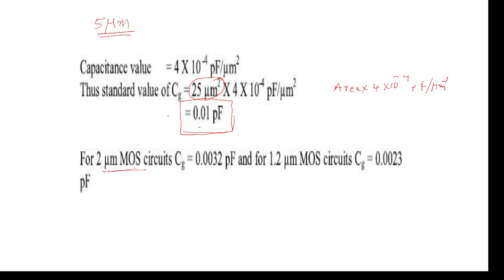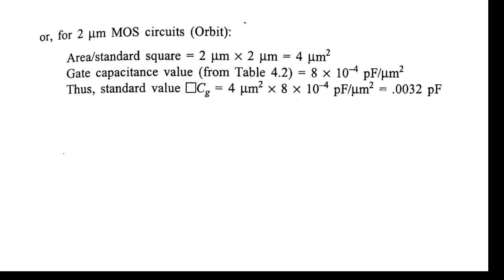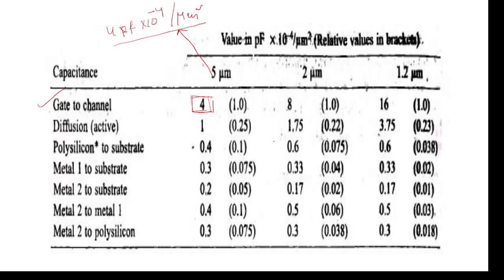Similarly, for 2 micrometer design rules, the standard capacitance value is 8×10⁻⁴ picofarads per micrometer square. For 1.2 micrometer design rules, it is 16×10⁻⁴ picofarads per micrometer square. These are the fixed standard values for gate-to-channel capacitance; for other layers, the capacitance values are different. In university exams, gate-to-channel capacitance is most commonly asked.